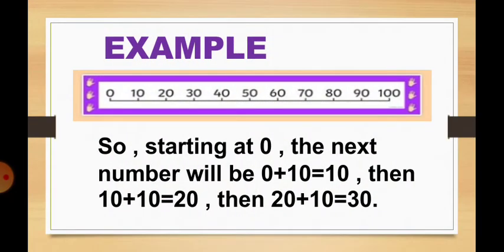So let me show one example. The starting number is 0. We are adding number 10, so 0 plus 10, we get the answer 10. Next, we are adding number 10, so 10 plus 10, we get the answer 20. Next, we are adding number 10, so 20 plus 10, we get the answer 30.